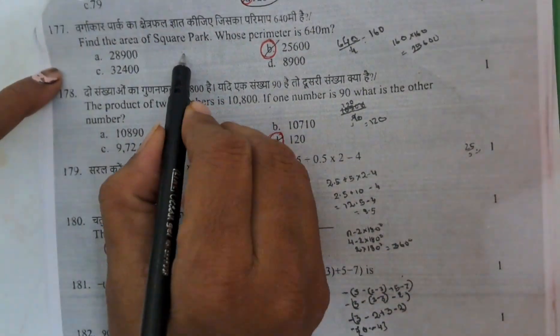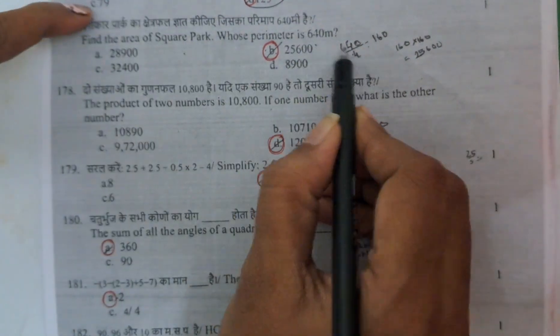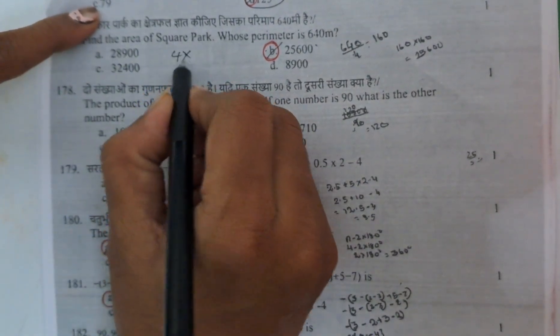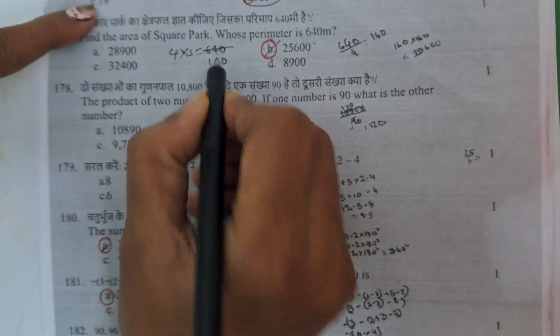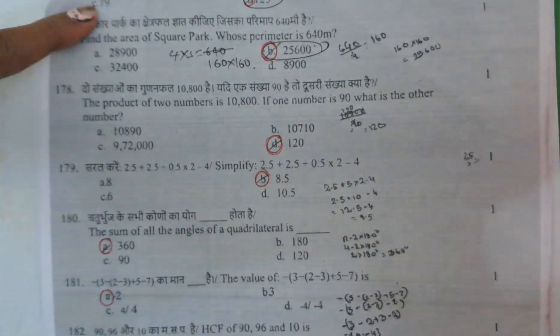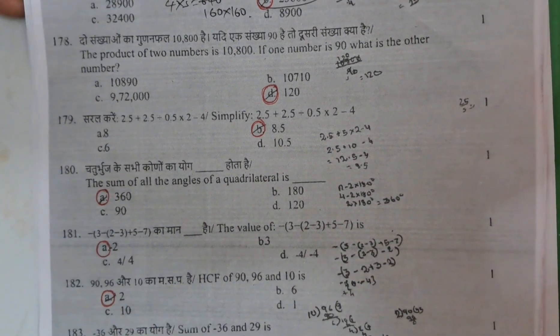Here find the area of the square park whose perimeter is 640. Perimeter formula 4 into side equals to 640. S equals to 160. 160 into 160 area 25,600.